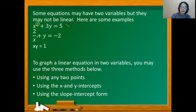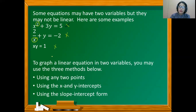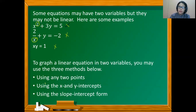For 2 over x plus y equals negative 2, there should be no variable in the denominator for this to be considered a linear equation. Likewise, the square root of x plus y equals 1 is not a linear equation. There are three methods for graphing linear equations in two variables: using any two points, using the x and y-intercepts, and using the slope-intercept form.